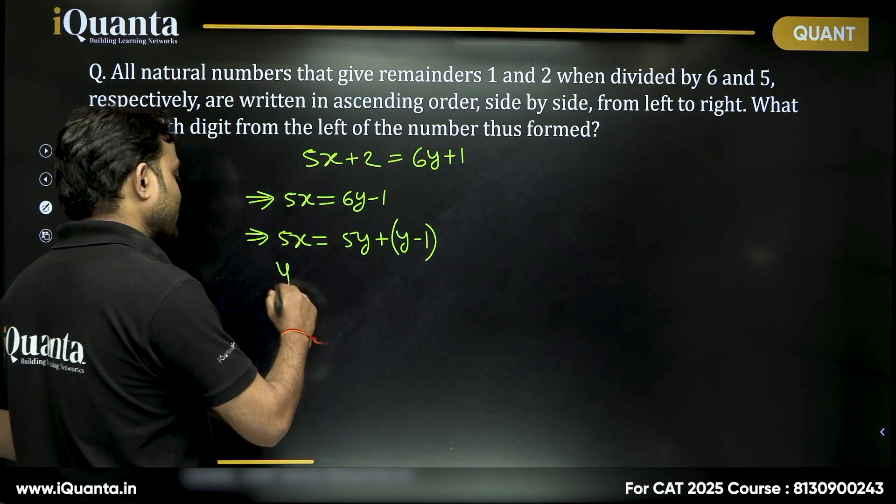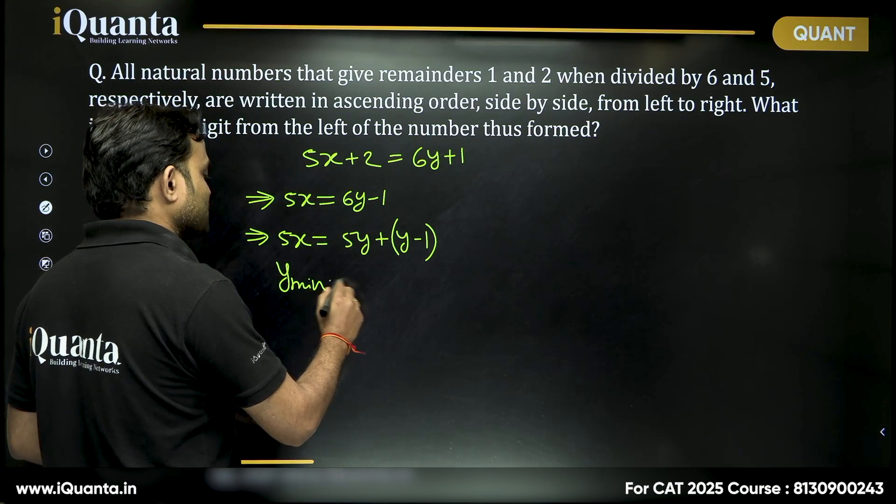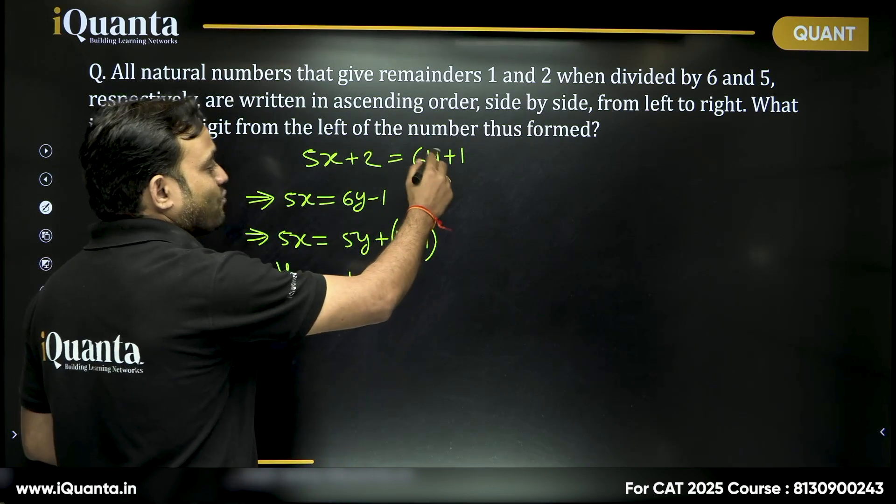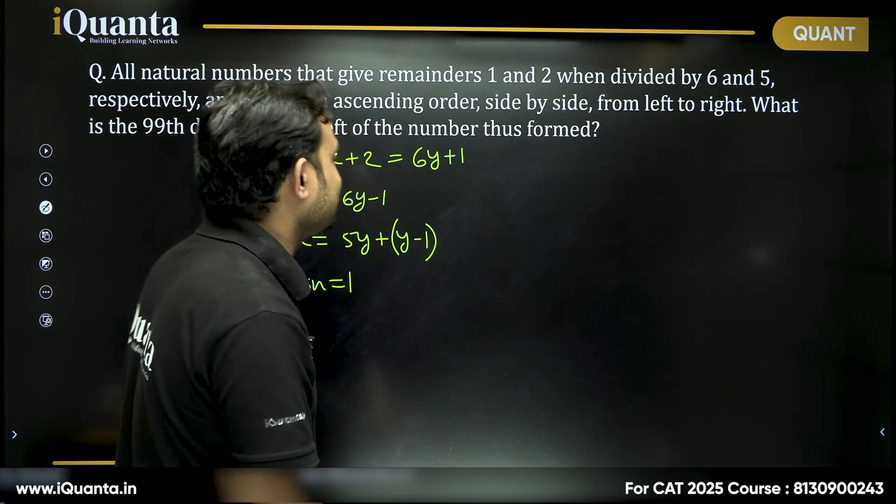So y minimum that we can take is 1. If I put y equals 1, then we are getting 7, as we found by hit and trial.